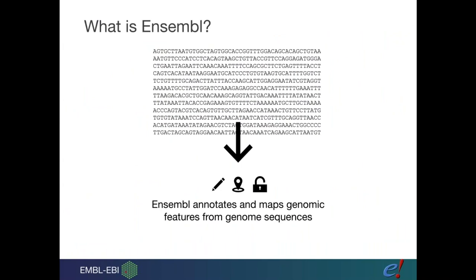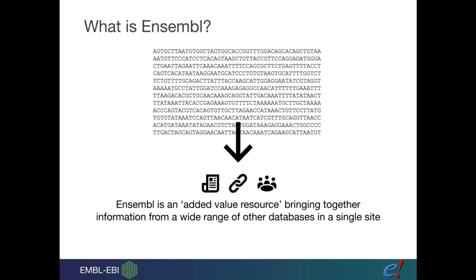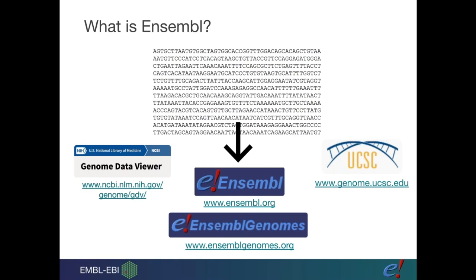Ensembl annotates genomes by mapping genomic features — genes, variants, and more — onto genome sequences. We add value by bringing together population data, citation data, and phenotype data onto genetic variants, consolidating many data types in one place. Ensembl is one of many publicly available online genome browsers alongside UCSC and NCBI's browser, as well as offline tools like IGV, each with different strengths and weaknesses.